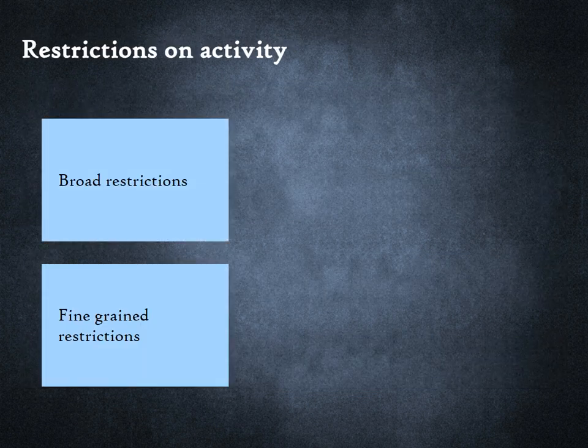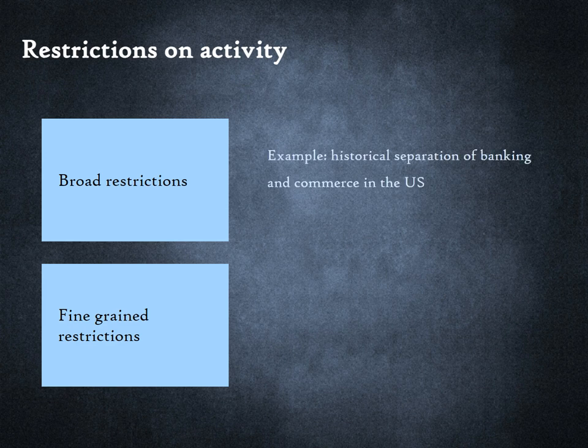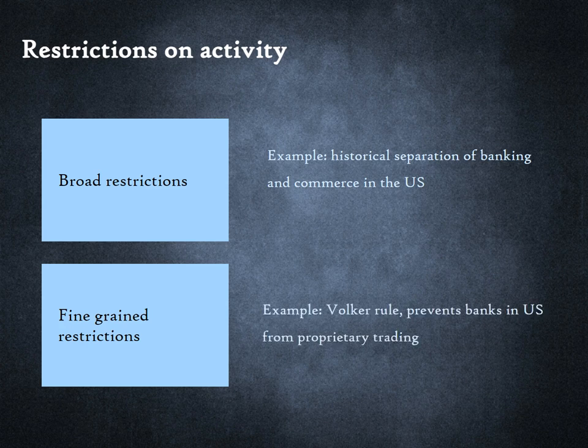Restriction on activity may be broad-based or fine-grained. An example of broad-based restriction is the historical separation of banking and commerce in the U.S. A bank may be permitted to enter into adjacent financial services like insurance but cannot own, say, a chain of supermarkets. Restrictions can be more fine-grained within a particular sphere of banking activity. For instance, as individuals we can engage in proprietary trading, which means we can buy securities like shares and bonds with a view to sell them later at a higher price. In the U.S., a rule called the Volcker Rule prevents banks from engaging in proprietary trading.